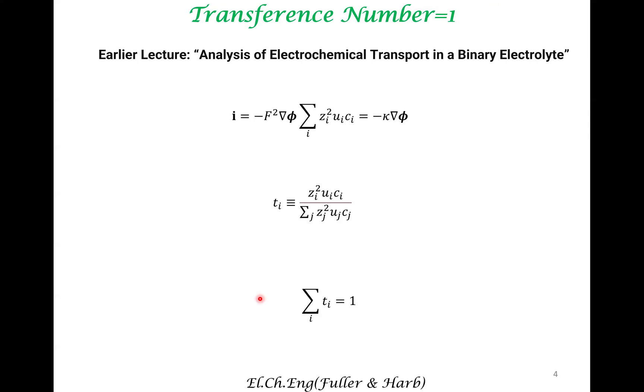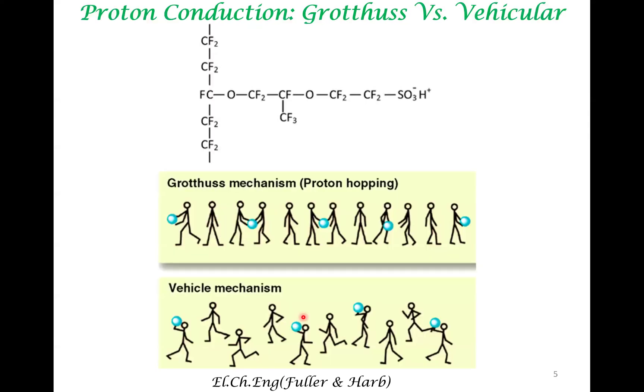When all the transference number should add up to one. When we say the transference number of proton is one, that means proton is the only current carrying species in this system. So the proton conduction in Nafion membrane is very high. That is, the conductivity of Nafion is rather high.